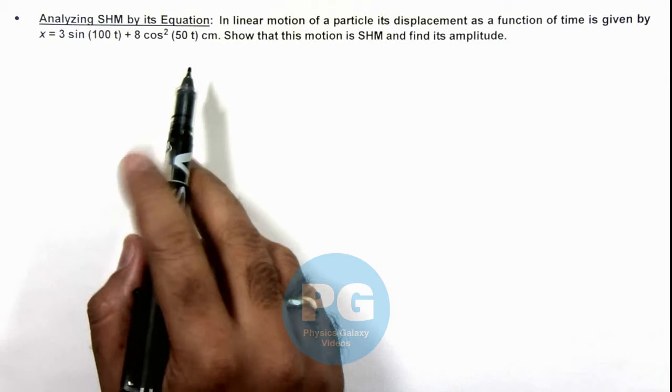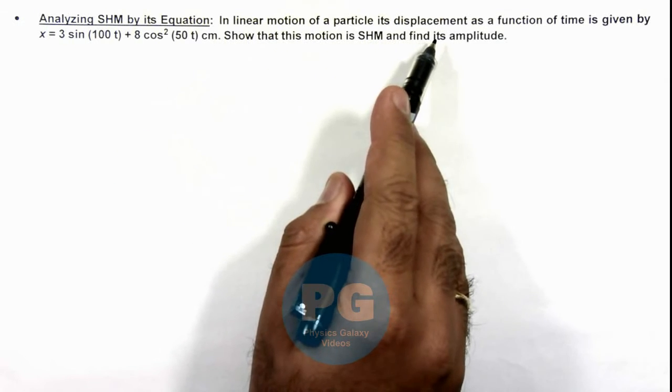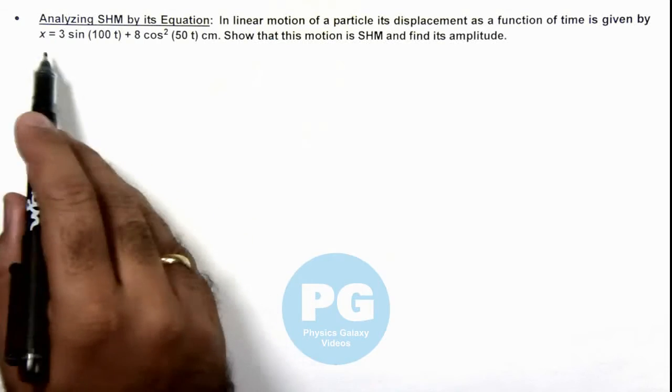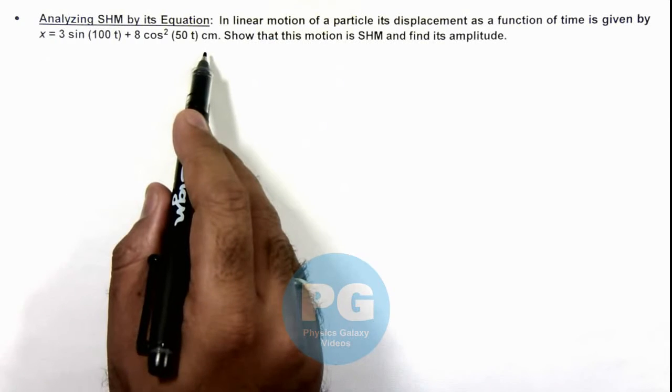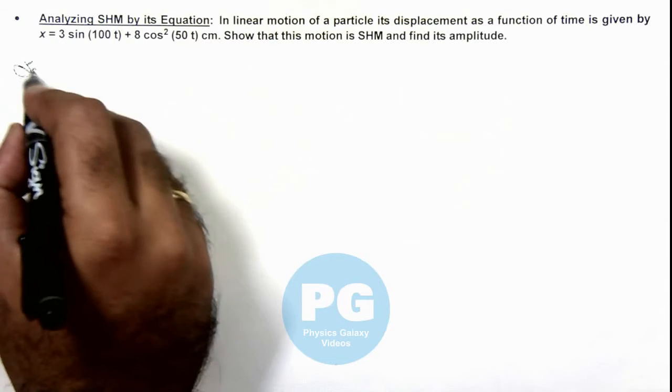In this illustration we'll analyze SHM by its equation. We are given that in linear motion of a particle, its displacement as a function of time is given by this expression. We are required to show that this motion is SHM, and we are also required to find its amplitude.